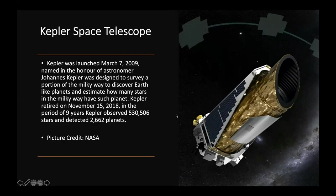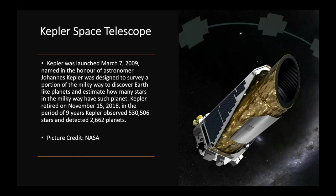There is another space telescope known as the Kepler Space Telescope. Kepler was launched on March 7, 2009, in honor of Johannes Kepler, and was designed to survey a portion of the Milky Way to discover earth-like planets and estimate how many stars have such planets. Kepler retired on November 15, 2018. In its nine-year period, Kepler observed 5,30,506 stars and detected 2,662 planets. Some of these are exoplanets — planets orbiting different stars outside our solar system — and Kepler has discovered more than 4,000–5,000 exoplanets.